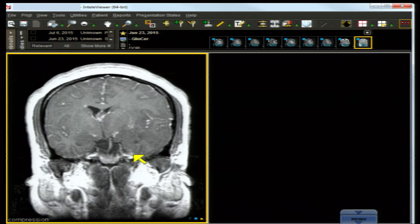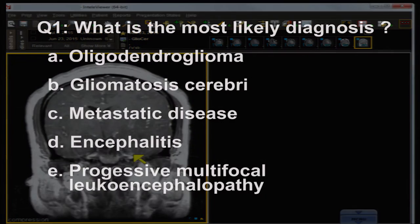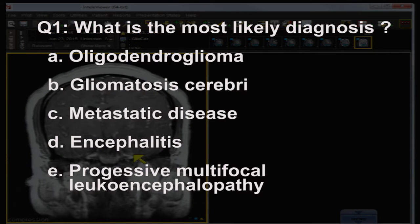Now that you've had a chance to review this somewhat complex case — one you might see on an exam — what is the most likely diagnosis? Is it A) oligodendroglioma, B) gliomatosis cerebri, C) metastatic disease, D) encephalitis, or E) progressive multifocal leukoencephalopathy?